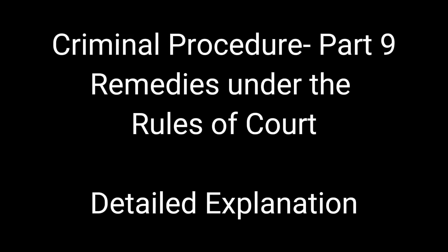Remedies against judgment of conviction. If you are the defense counsel of the accused and your client was convicted, it is not yet the end of the world because there are remedies available as provided by the rules. These are: modification of judgment under Section 7 of Rule 120; reopening of proceedings under Section 24 of Rule 119; motion for new trial and motion for reconsideration under Section 1 of Rule 121; and appeal under Rule 122.